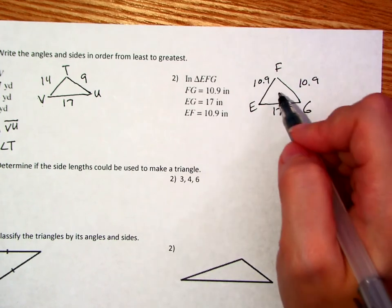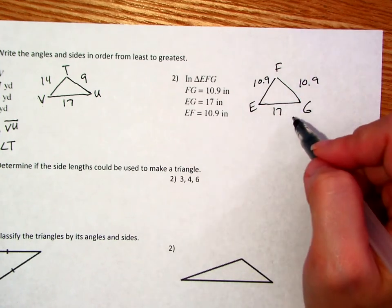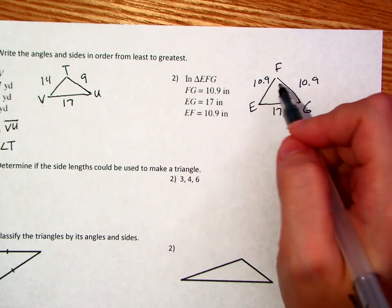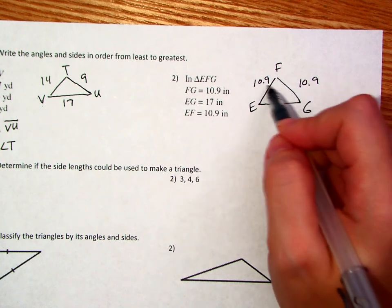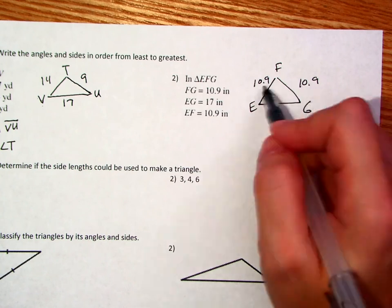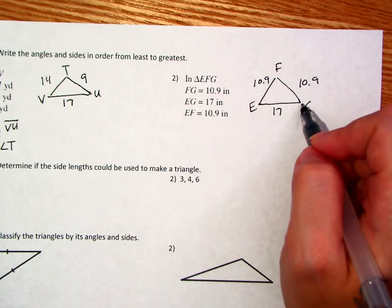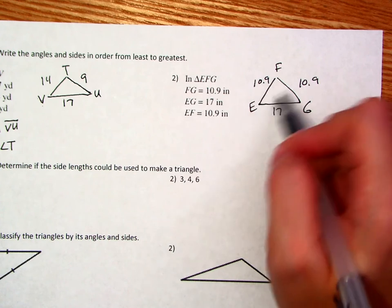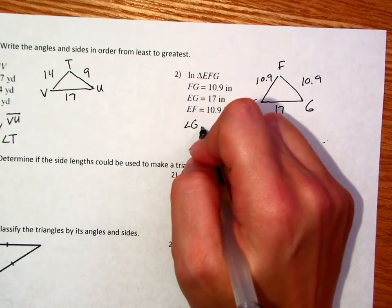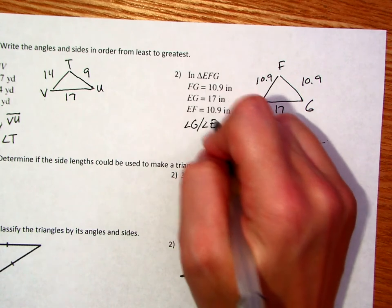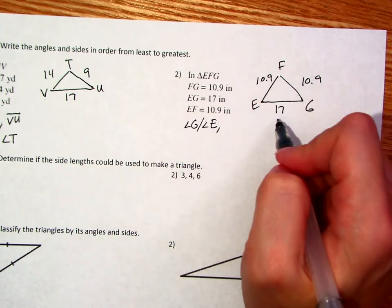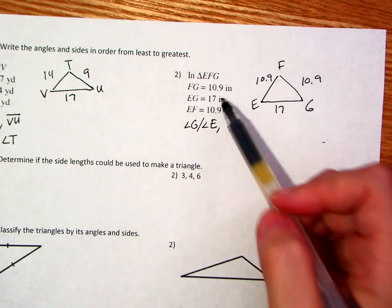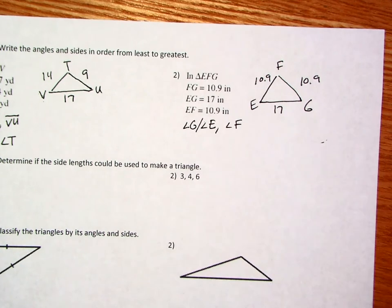So again, the idea is that the angles and the sides kind of correlate to each other. So in this case, if you look, the smallest angles that we have would be opposite of the smallest sides, and these sides are the same, so we've really got an isosceles triangle here. So angles G, that's opposite of this one, and angle E, that's opposite of this one. Angle G and angle E are going to be the first one, and then the longest angle, the largest angle, would be the largest side, so then that would be angle F. And then clearly you could put those sides in order from least to greatest.